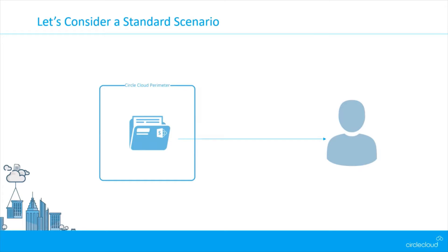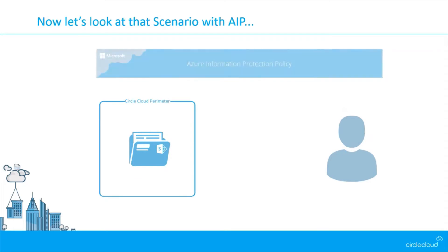However, what that doesn't help us with is when somebody opens that document and saves it on their own machine or sends it to someone outside the organization - we've pretty much lost control over that document. What we're going to look at is how Azure Information Protection embeds protection into the document itself, not just at the storage level. It'll encrypt the document, and regardless of what they do with it, they'll only be able to do what we want them to do. The protection is applied at the document level, so we're protecting the document no matter where it ends up.